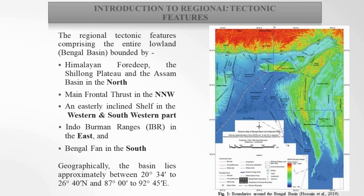The area is bounded by the Himalayan foothills and the Shillong Plateau to the Assam basin in the north, the Main Frontal Thrust in the northwest, the stable shelf in the western and southwestern part, the Bengal Fan in the south, and the Indo-Burman ranges in the east. The map in figure one shows the whole thing as described.